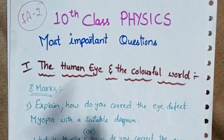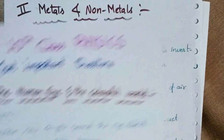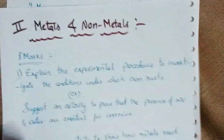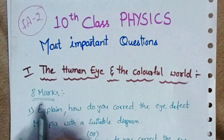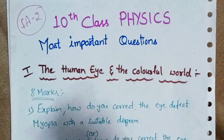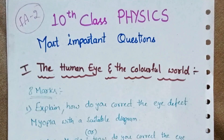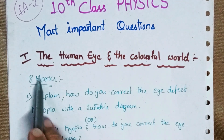We have three chapters given from physics. The first one is Human Eye and the Colorful World, the second one is Metals and Non-metals, and the third one is Electricity. These three chapters are given for the FA2 exam from physics. We'll discuss all eight-mark questions, four-mark questions, one-mark and two-mark questions. Please pause the video and write it down or mark it in your workbook.